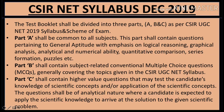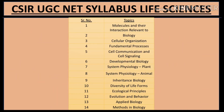For UGC NET Life Sciences, the topics you need to cover are: molecules and their interaction relevant to biology, cellular organization, fundamental processes, cell communication and cell signaling, developmental biology, system biology, plant sciences, animal sciences, inheritance biology, diversity of life forms, ecological principles, evolution and behavior, and applied biology. These cover all major areas of life sciences.